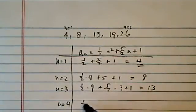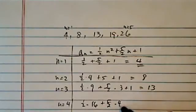n equal to 4, half times 16, plus five and a half, times 4, plus 1, is 19.